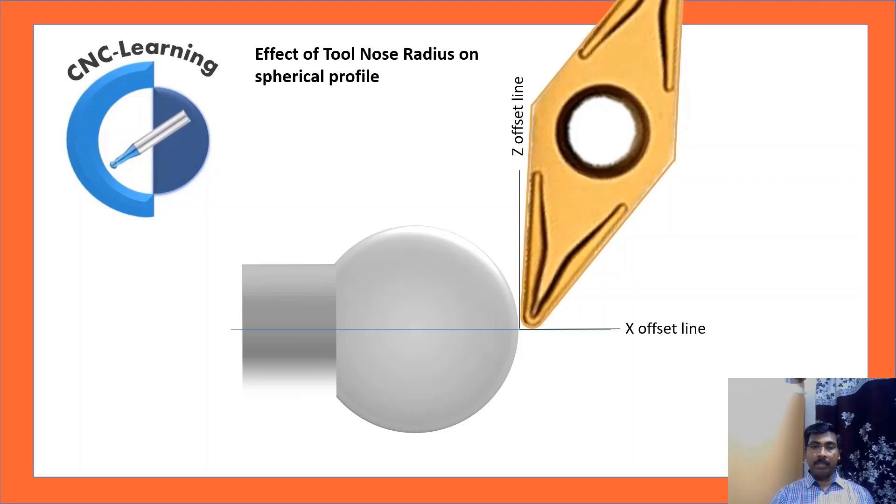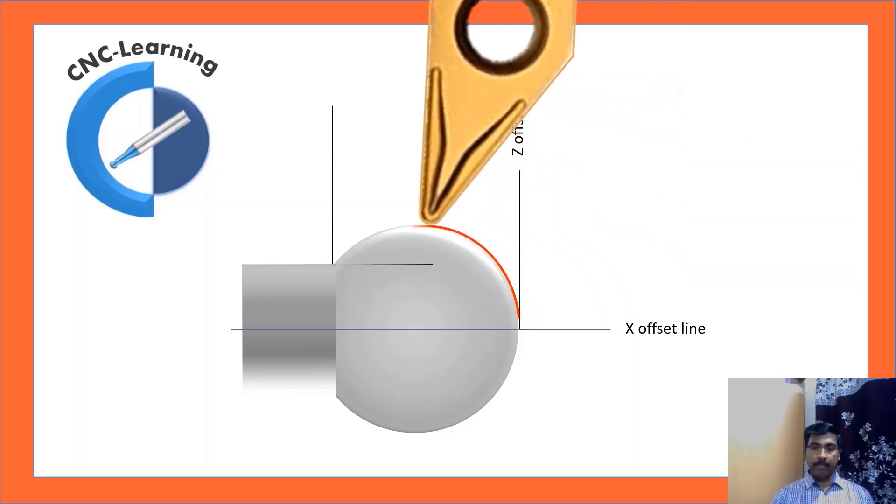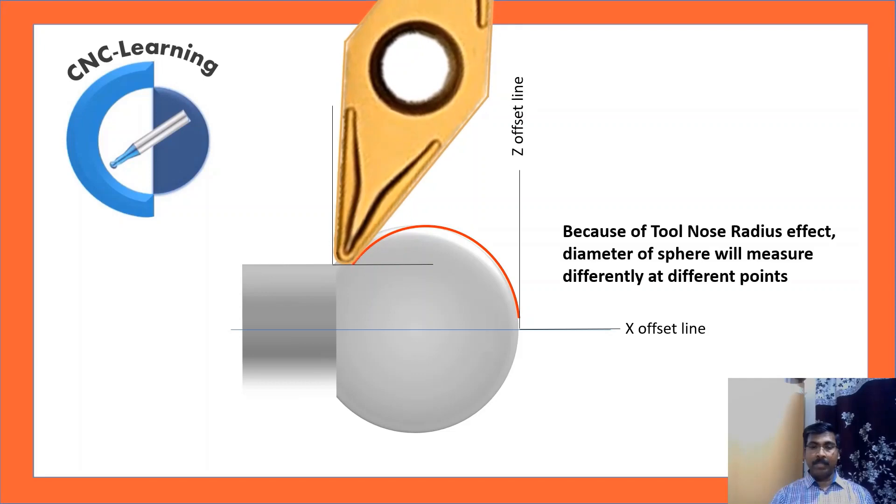Now let us see the effect of tool nose radius on spherical profile. You can see the sphere, the front portion is almost matching with what is required, whereas the back side of the sphere is over cut by the tool back side. Because of tool nose radius effect, diameter of sphere will measure differently at different points.